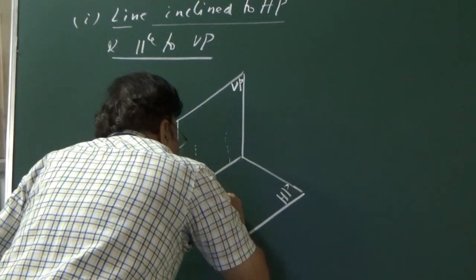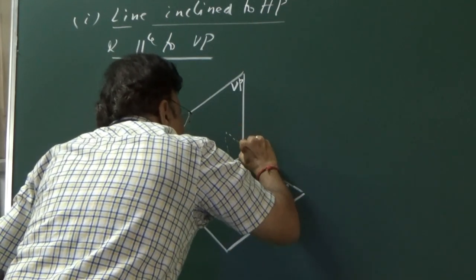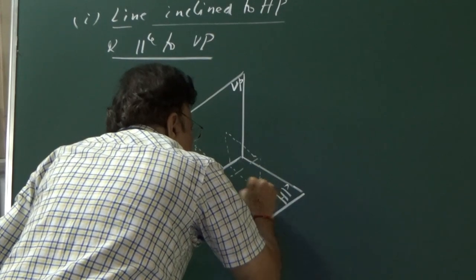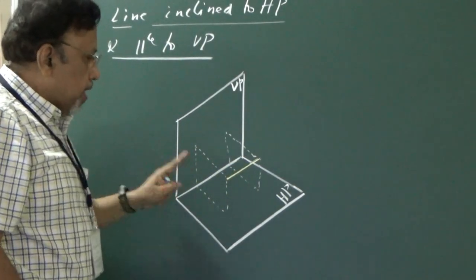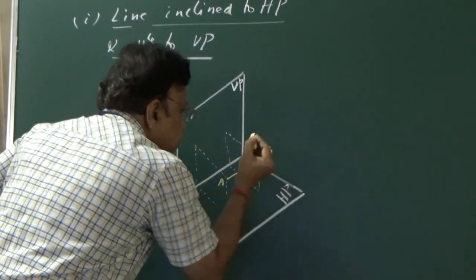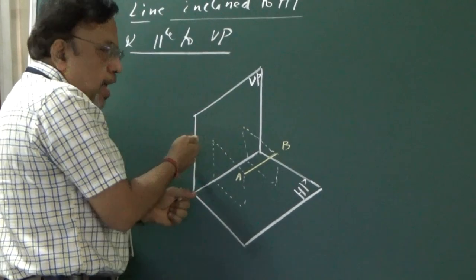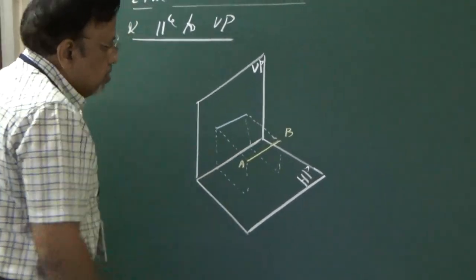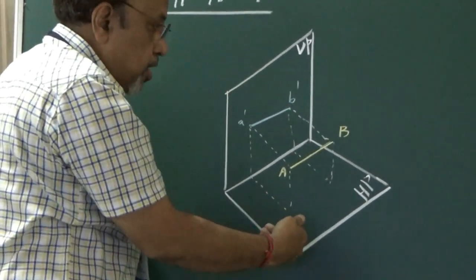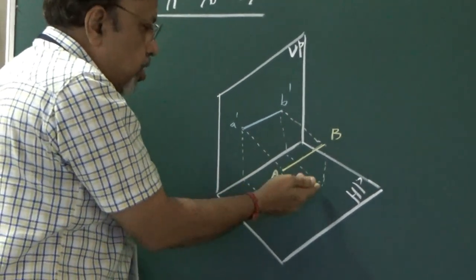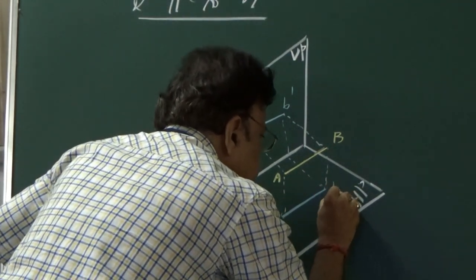I have considered the line initially parallel to both VP and HP, calling its ends A and B. If I look from the front, since the line is parallel to VP, I see the true length in the front view. Similarly, looking from the top projected onto HP, since the line is also parallel to HP, I see the true length in the top view as well. Now I want to make this line inclined to HP.